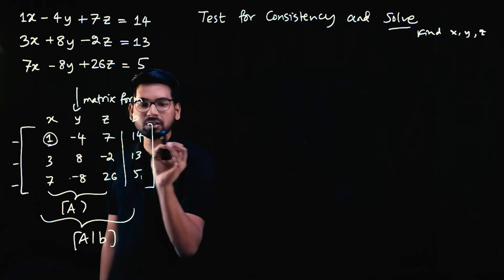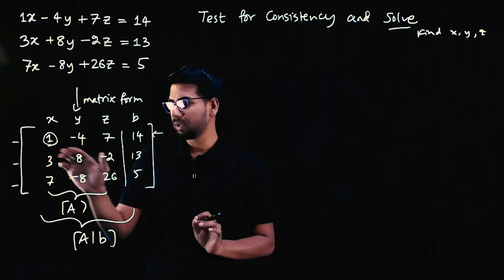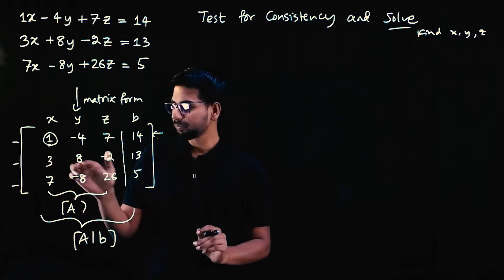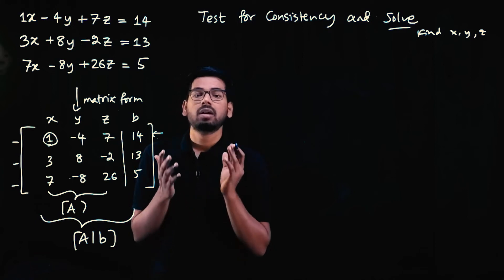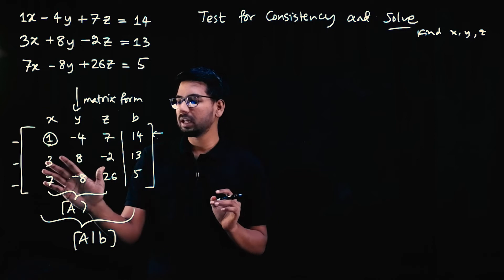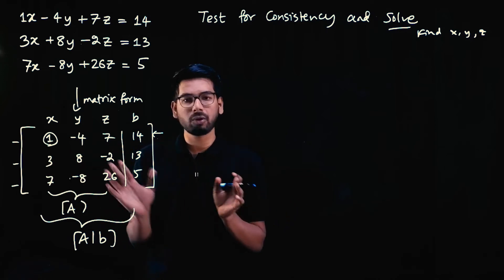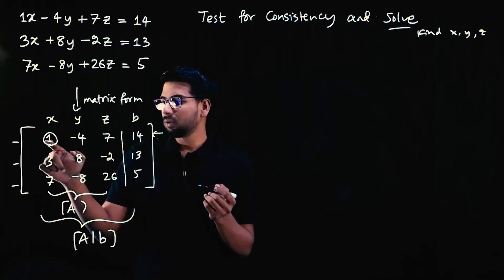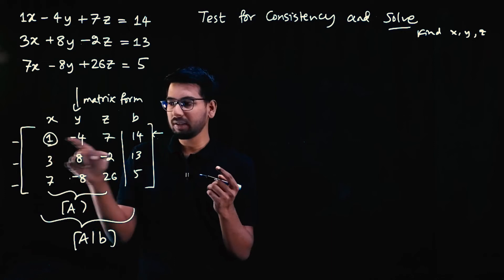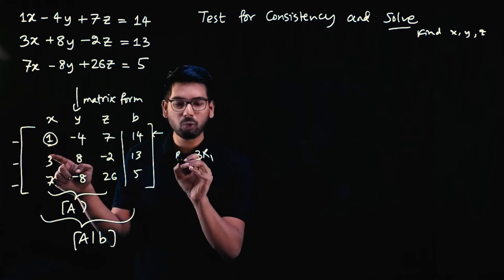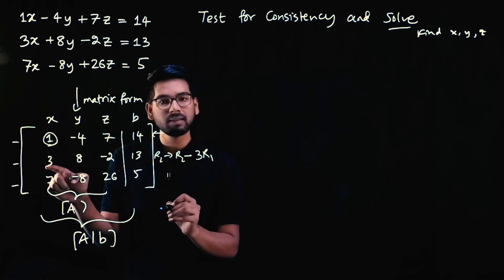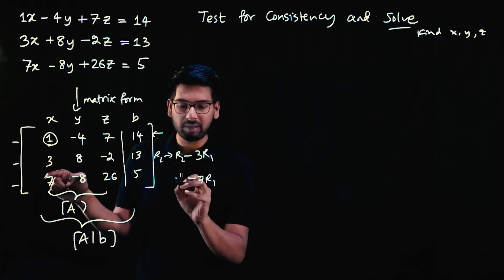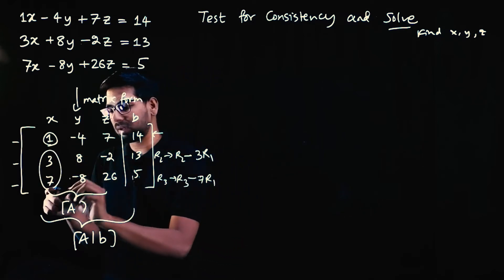Rank is a matrix concept. We can determine if a system is consistent or not by comparing ranks. Rank of A versus rank of AB — if rank(A) equals rank(AB), the system is consistent. The rank is the number of non-zero rows after row operations. Using the first row element 1, we need to make the first elements of the other two rows zero.